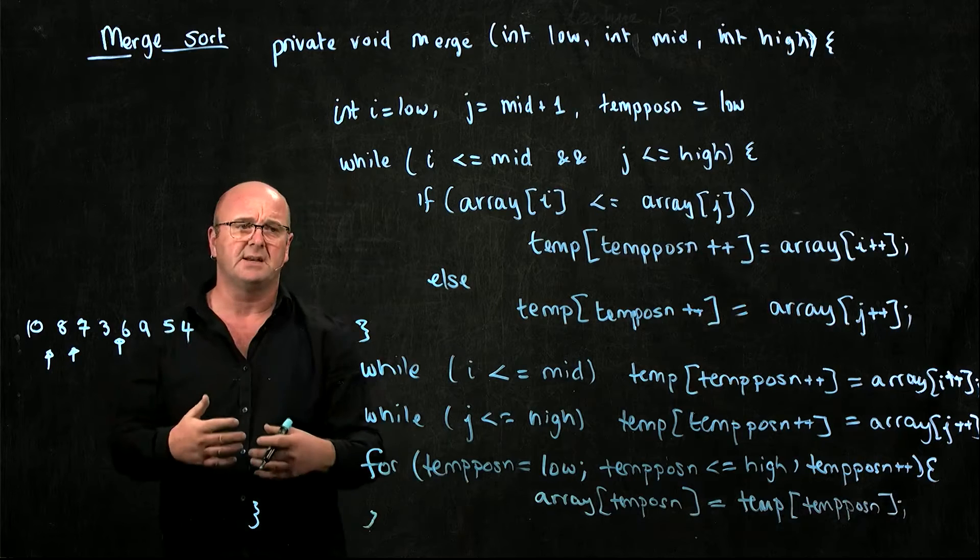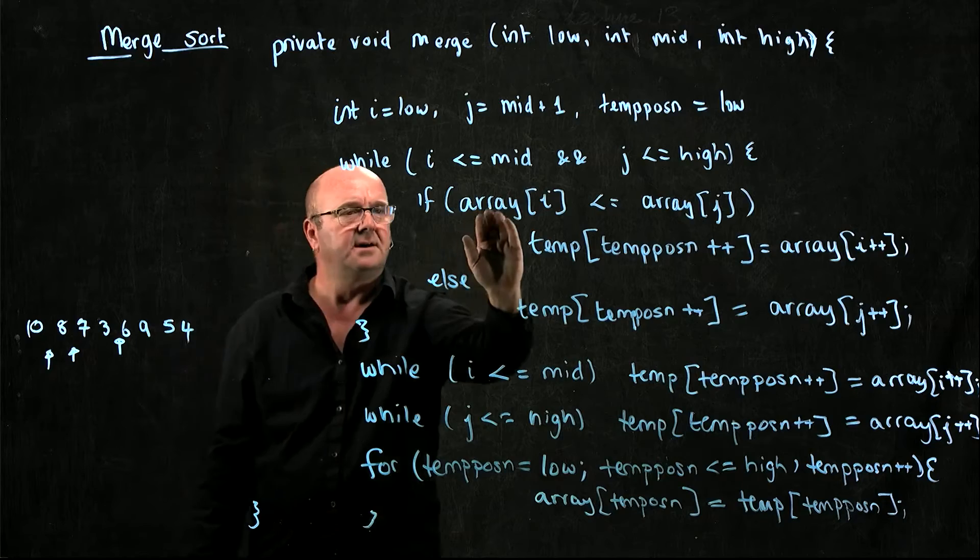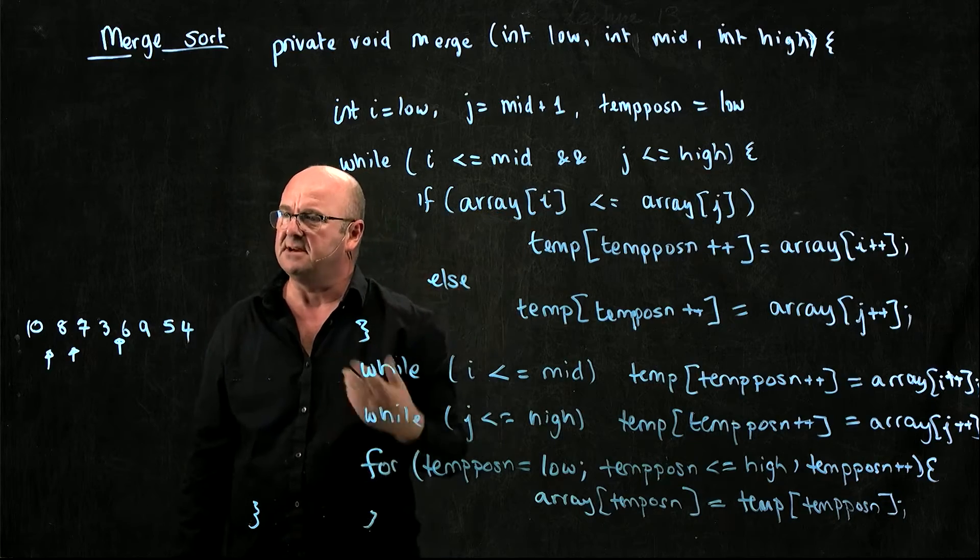And so we've copied everything back into the original array, so the next time around when we're in the merge method, our globally scoped array has the right variables.